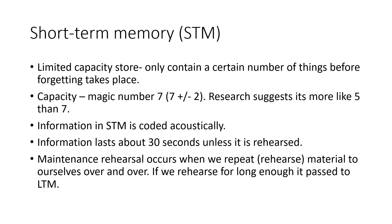Short-term memory is a limited capacity store, so it only holds a certain number of things before forgetting takes place. The capacity is that magic number seven — seven plus or minus two items — though research suggests it's more likely to be five than seven. Information in short-term memory is coded acoustically and lasts about 30 seconds unless rehearsed. Maintenance rehearsal occurs when we repeat material to ourselves over and over, and the model argues that if we rehearse for long enough, it passes into long-term memory.